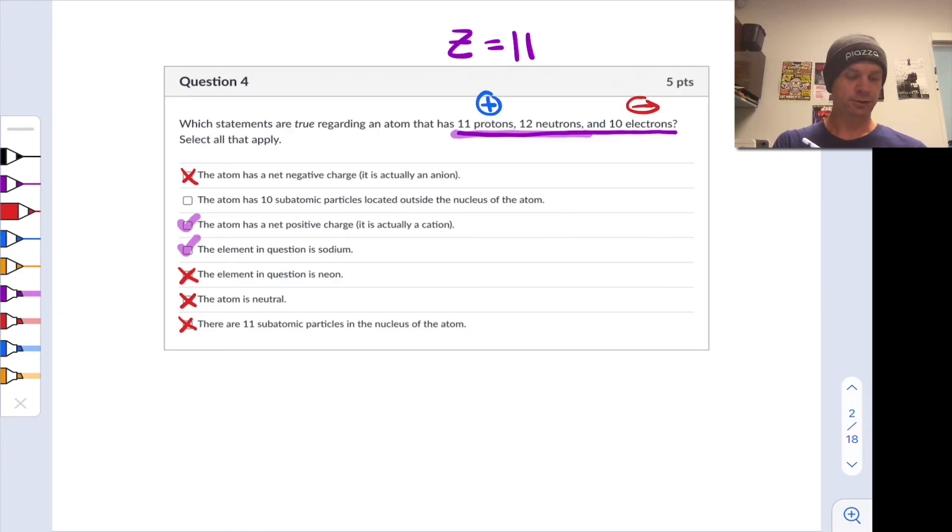This last statement says the atom has 10 subatomic particles located outside of the nucleus of the atom. And here, indeed, if we look at the number of electrons, there are 10 electrons. These are located outside of the nucleus. Electrons orbit the nucleus. So yes, indeed, this atom has 10 subatomic particles located outside the nucleus of the atom.